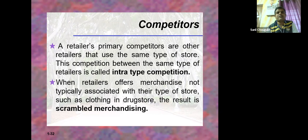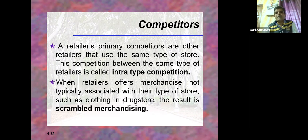A retailer's primary competitors are other retailers that use the same type of store. This competition between the same type of retailers is called intra-type competition. When a retailer is selling a food product, and the same brand or same type of food is sold in 10 other retail stores, that type of competition is called intra-type competition.